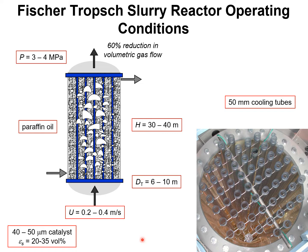The key question we address in this presentation is what is the flow regime under which the FT reactor operates given these conditions. It is important to note that the catalyst used for the Fischer-Tropsch reaction is in the range of 40 to 50 micrometers, and the catalyst concentration is about 20 to 35 volume percent based on the liquid phase — a highly concentrated catalyst within the liquid phase.